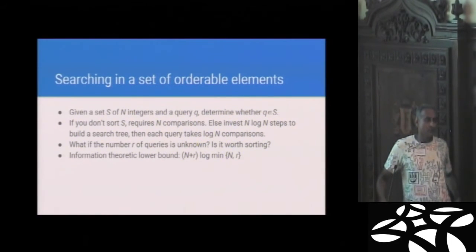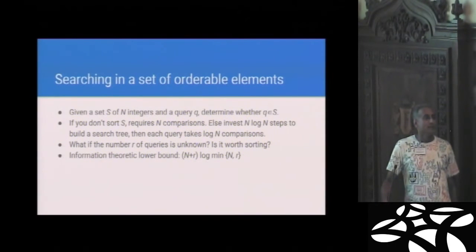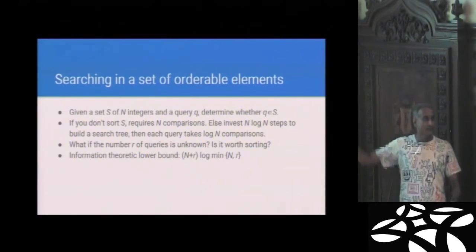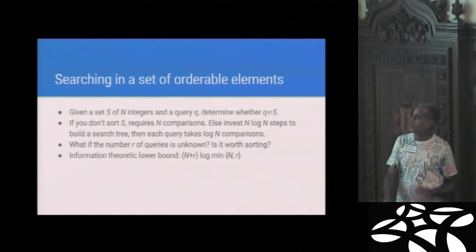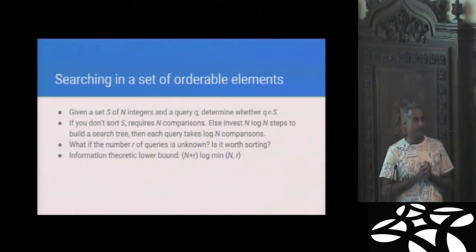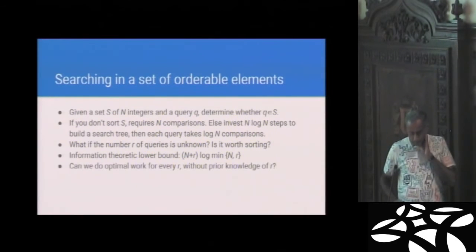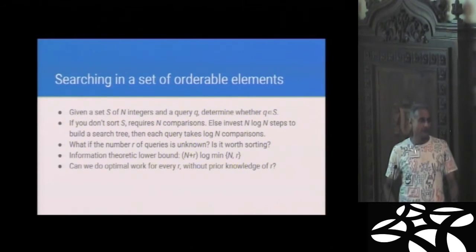So in this case, you can show that an information theoretic lower bound, pretty straightforward, has this number of comparisons. In other words, the number of comparisons you must invest in fielding r queries on an unordered set of n elements, on an orderable set of n elements, is this thing here. It looks like n plus r log smaller one. And you say, is that matchable? And this is the homework question that we had that we were given. So the question is this without a priori knowledge of r, can we do optimal work for every r?